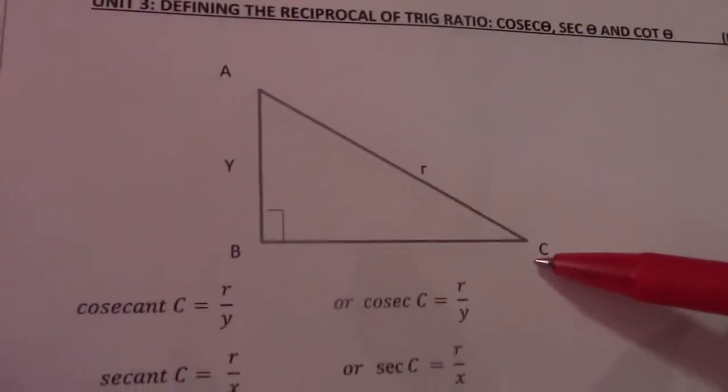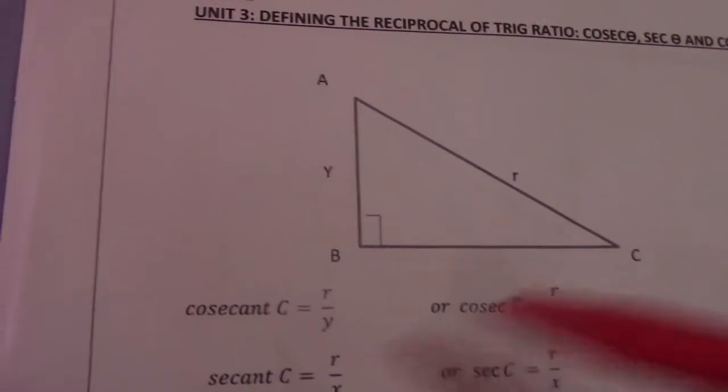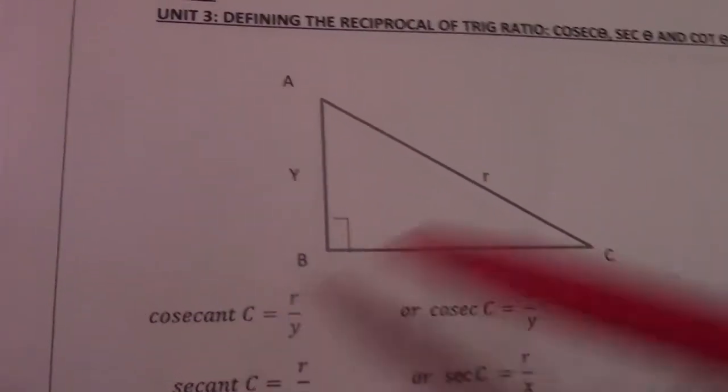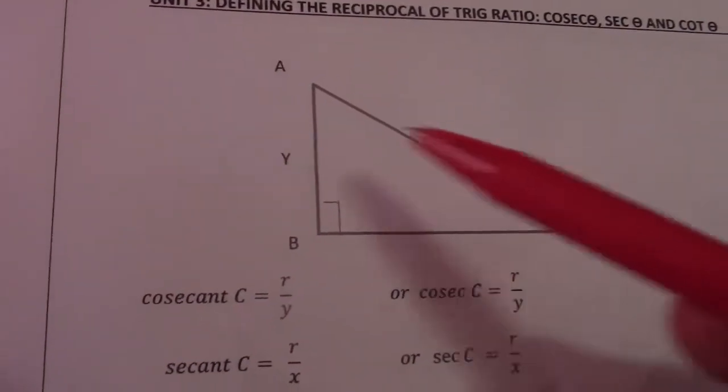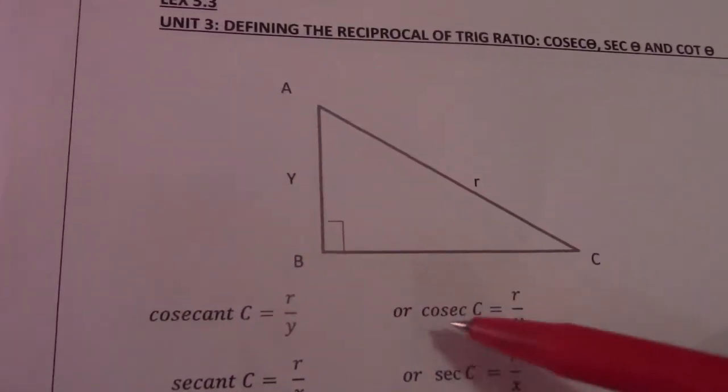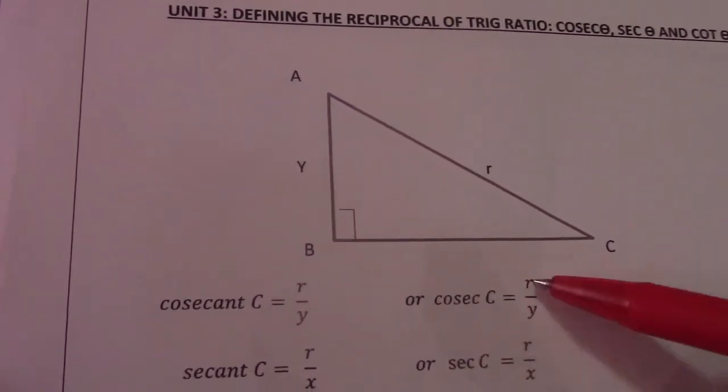There again I am using c as a reference angle, so cosecant c equals r over y, or we say cosec c equals r over y.